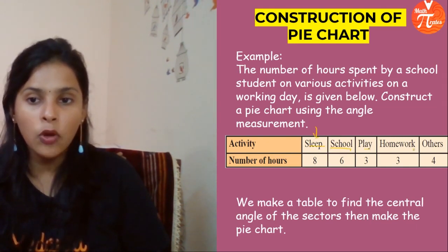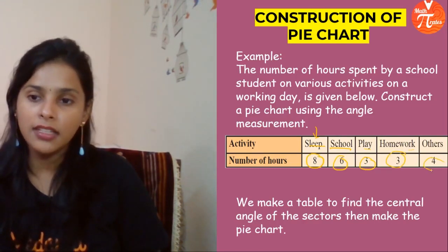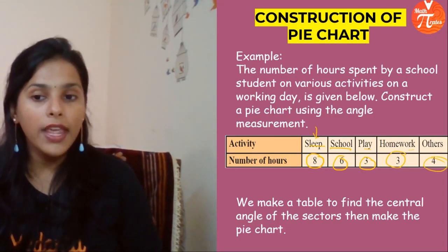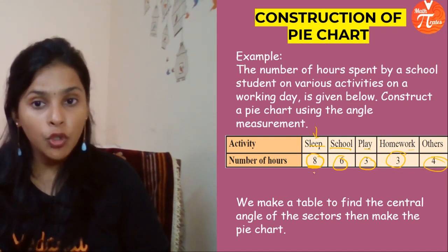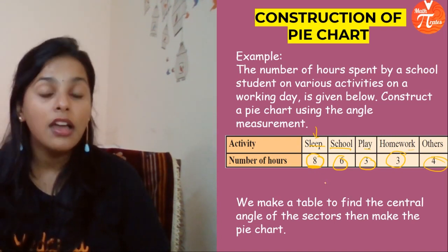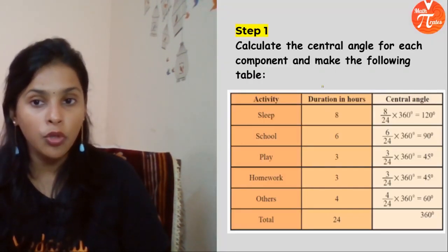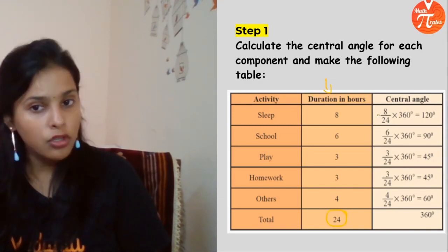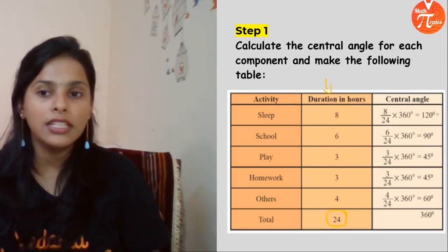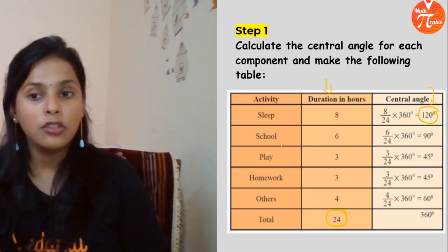Sleep, school, play, homework, and others. Sleep is 8 hours, school is 6 hours, play is 3 hours, homework is 3 hours, and others is 4 hours. To convert these hours into angles, you need to find the central angle. First, convert the sleep hours into the central angle: 8 hours divided by total hours, which is 24, multiplied by 360. That will be your central angle for sleep. Similarly, school is 90 degrees.